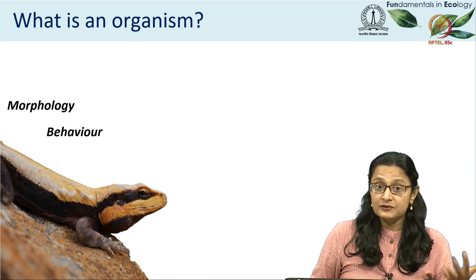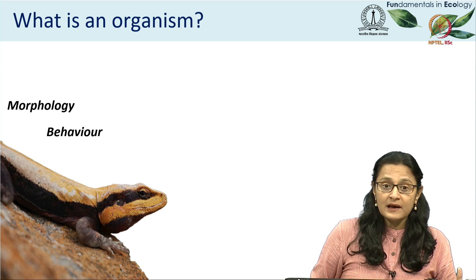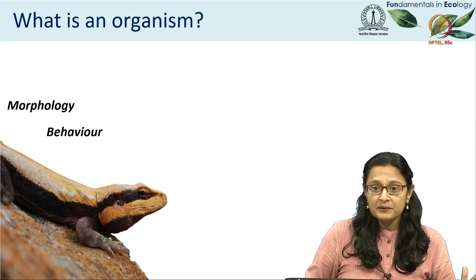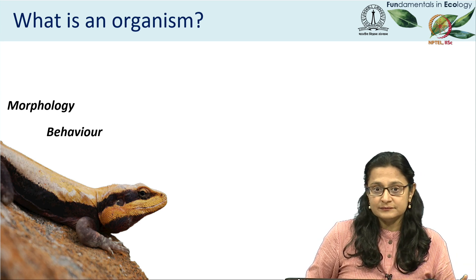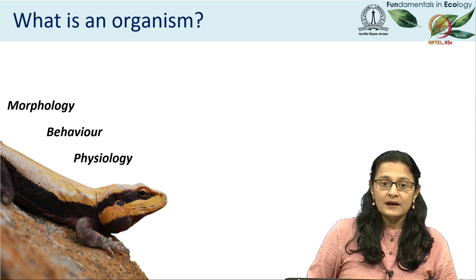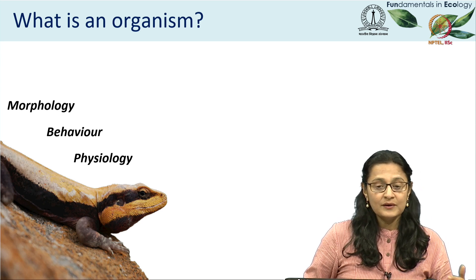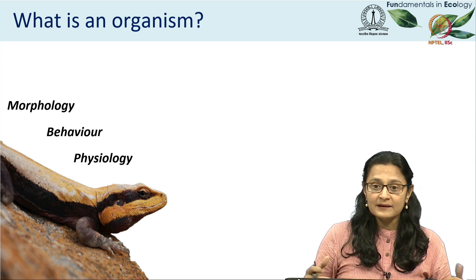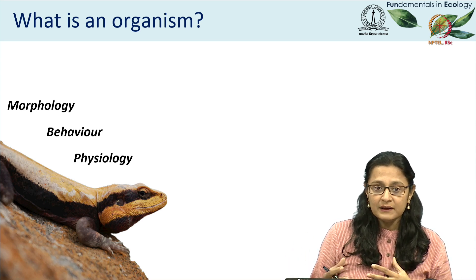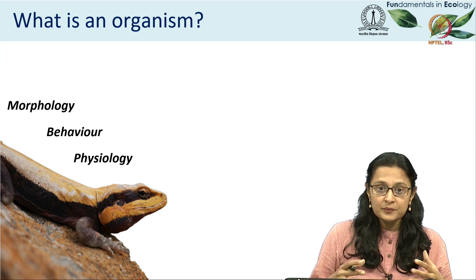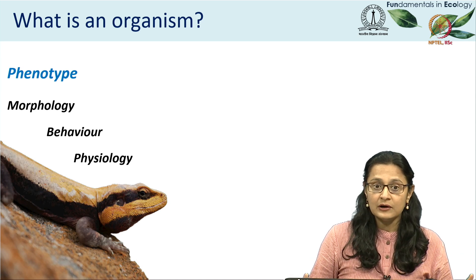You could also describe an organism based on its behaviour. For example, this lizard lives in rocky habitats and can run fast in rocky environments. So that would be its behaviour, or it basks all day long — that is its behaviour. You can describe it based on its physiology; it's an ectotherm, which means it thermoregulates in a way that is defined by its ectothermy.